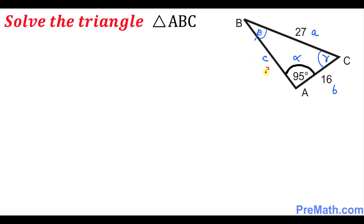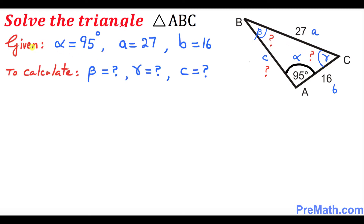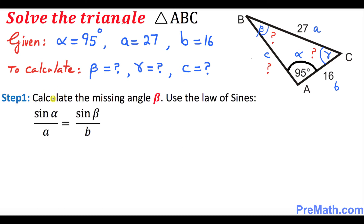We need to find side c, angle beta, and angle gamma. Our known values are: angle alpha is 95°, side a is 27, and side b is 16 units. In our first step, we want to calculate the missing angle beta, using the law of sines: sine alpha over a equals sine beta over b.